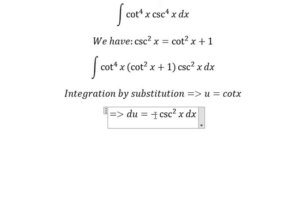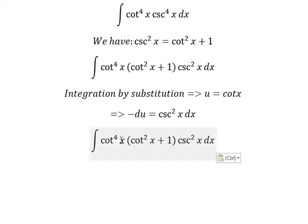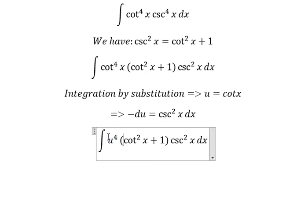We have a negative here, so we put a negative in front of the integral. The reason is that we don't have the negative next to the integral. This one we change to u⁴, and this one we change to u² + 1. Csc²(x) dx we change to negative du.